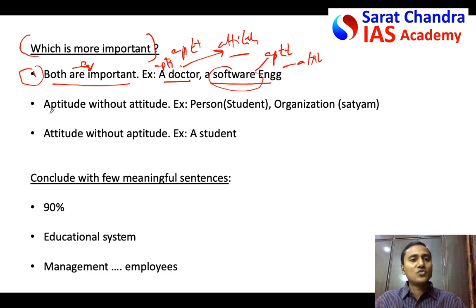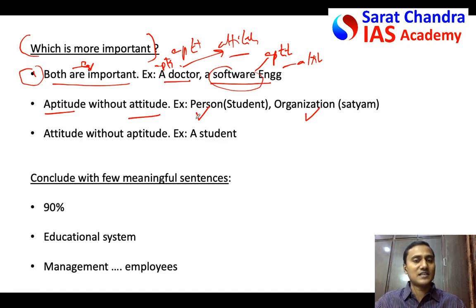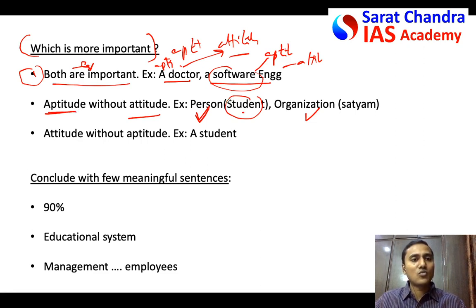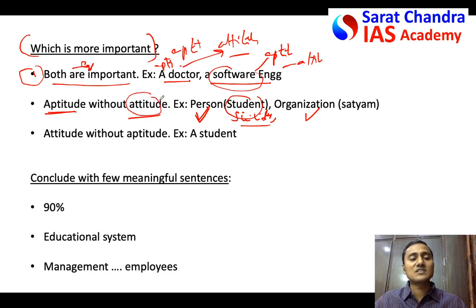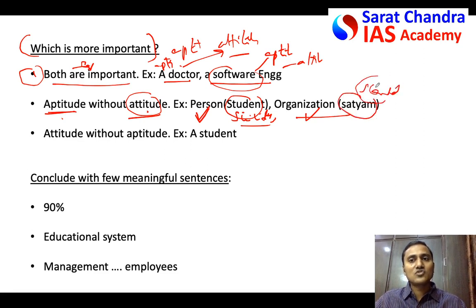It is better to also show situations where only aptitude is there but attitude is not. As the question asks about a person and an organization, give both examples. Take a student who has good aptitude — good knowledge in mathematics and science, good writing skills — but could not clear a competitive examination. Some students we see are committing suicide when they cannot succeed in an examination. This means they have a negative attitude towards life. Though they have good aptitude, if they do not have good attitude, their life actually gets ruined.